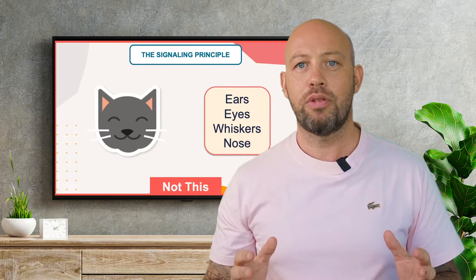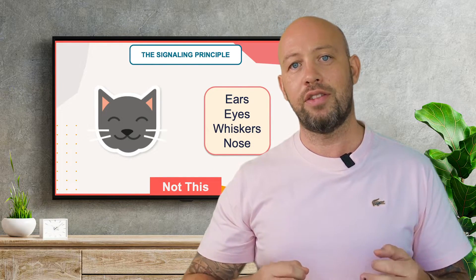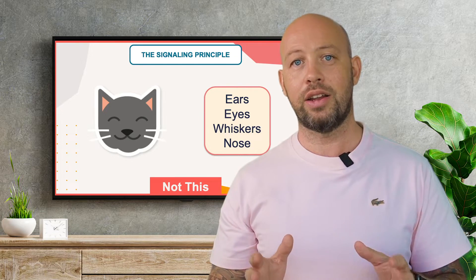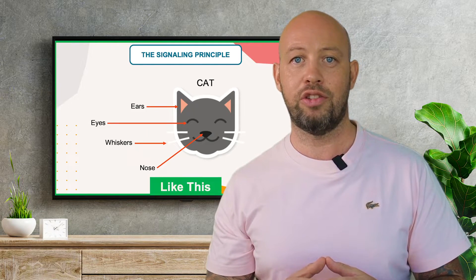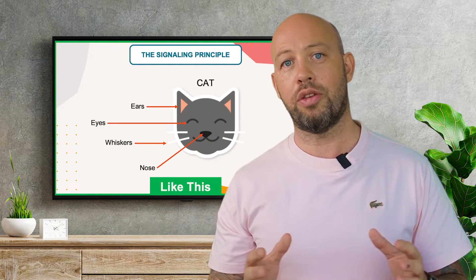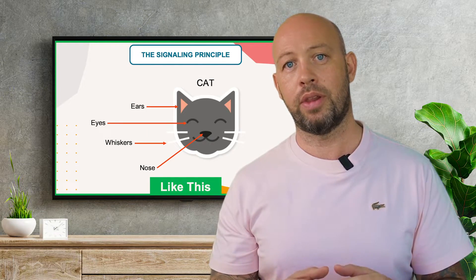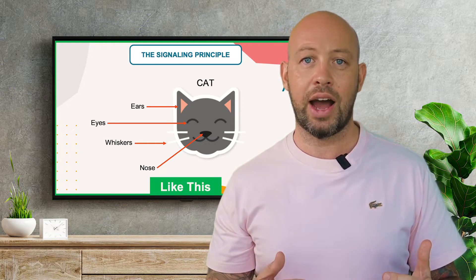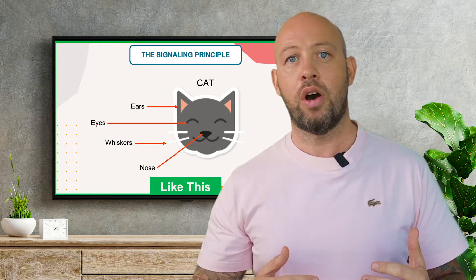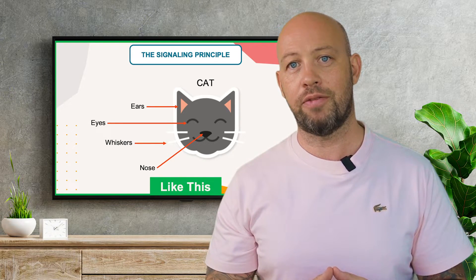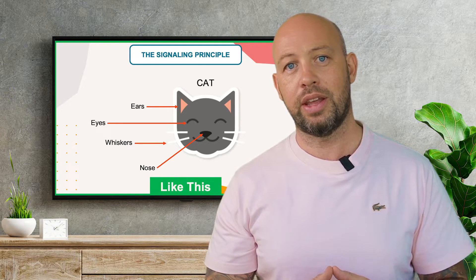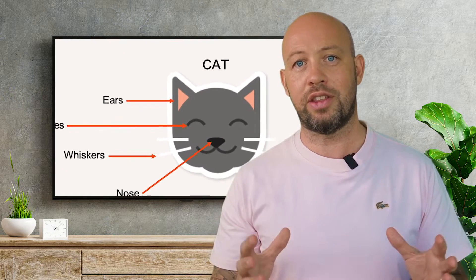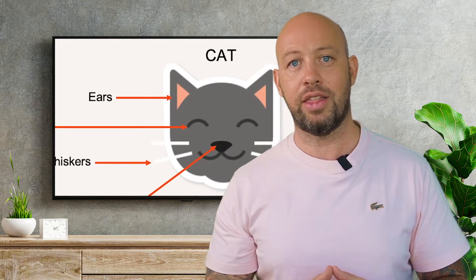The signalling principle advises you to specifically show the learner exactly what to pay attention to on the screen. Maybe important words are highlighted, or arrows point to important information. In videos, you can also zoom into things to highlight them.